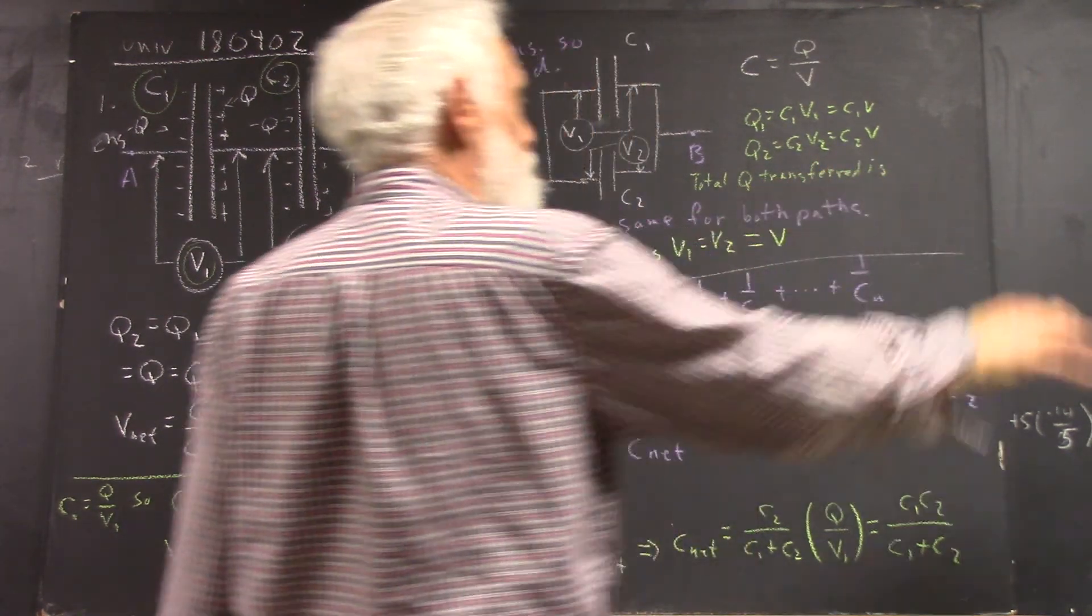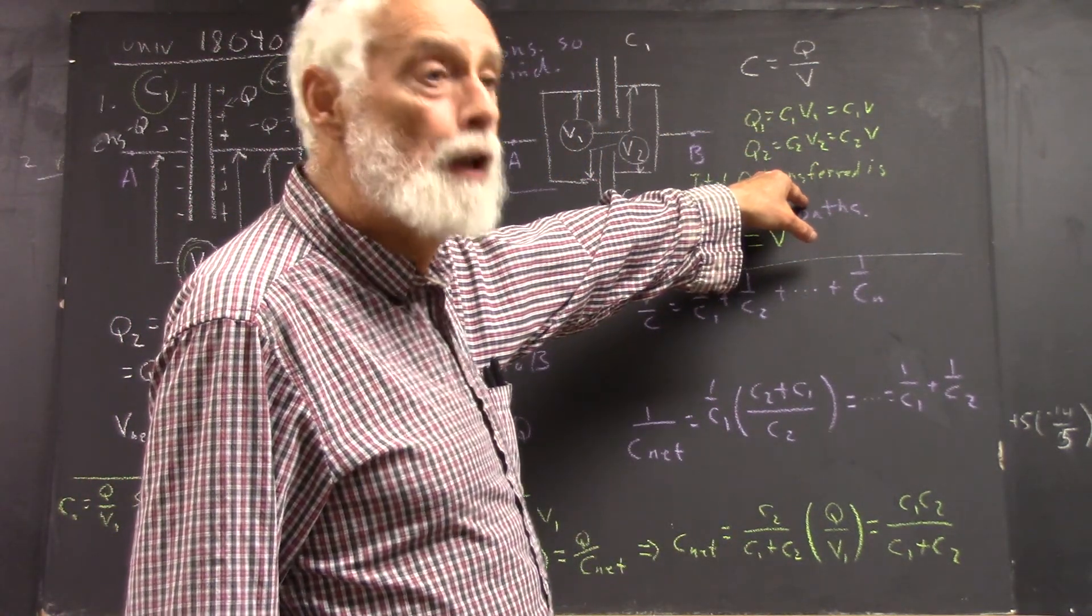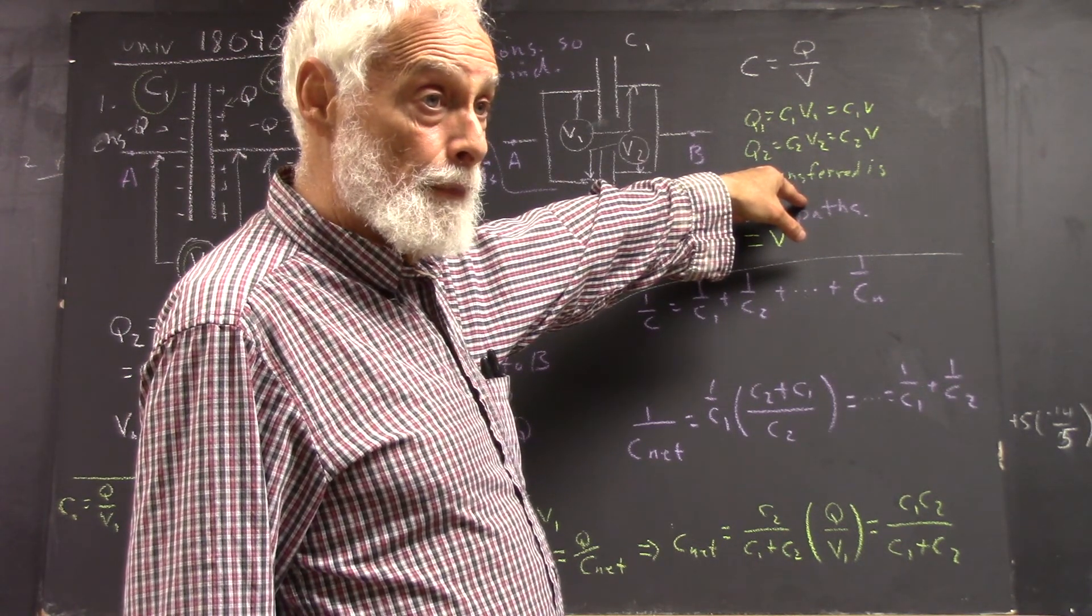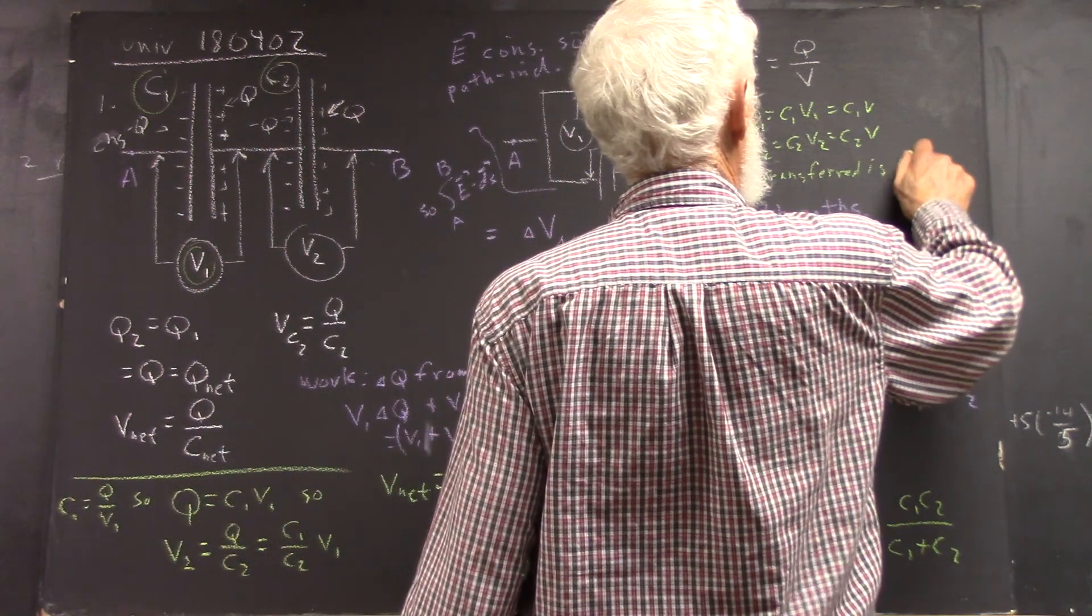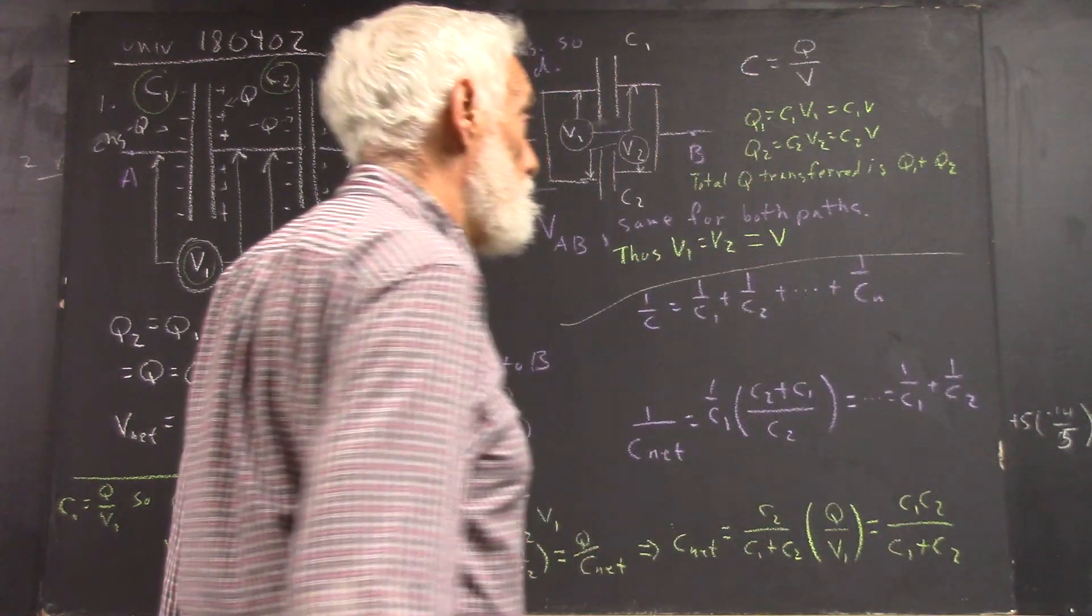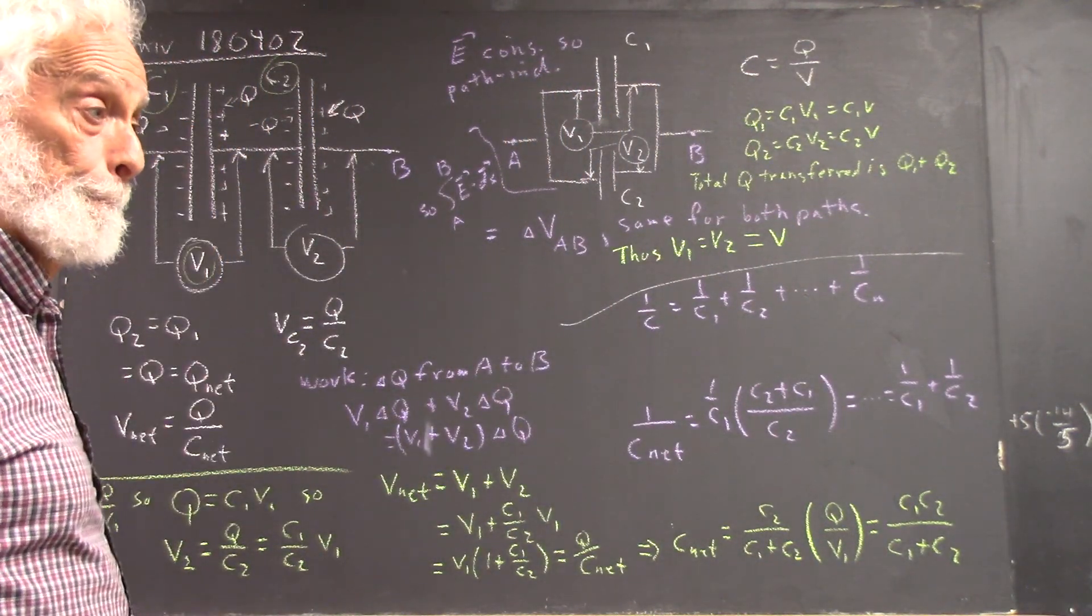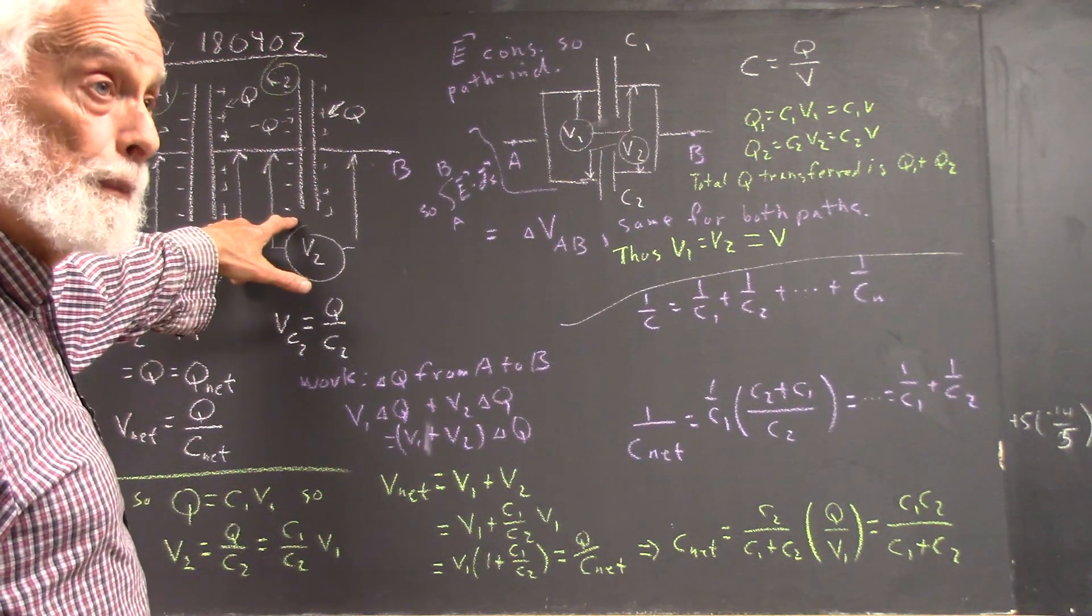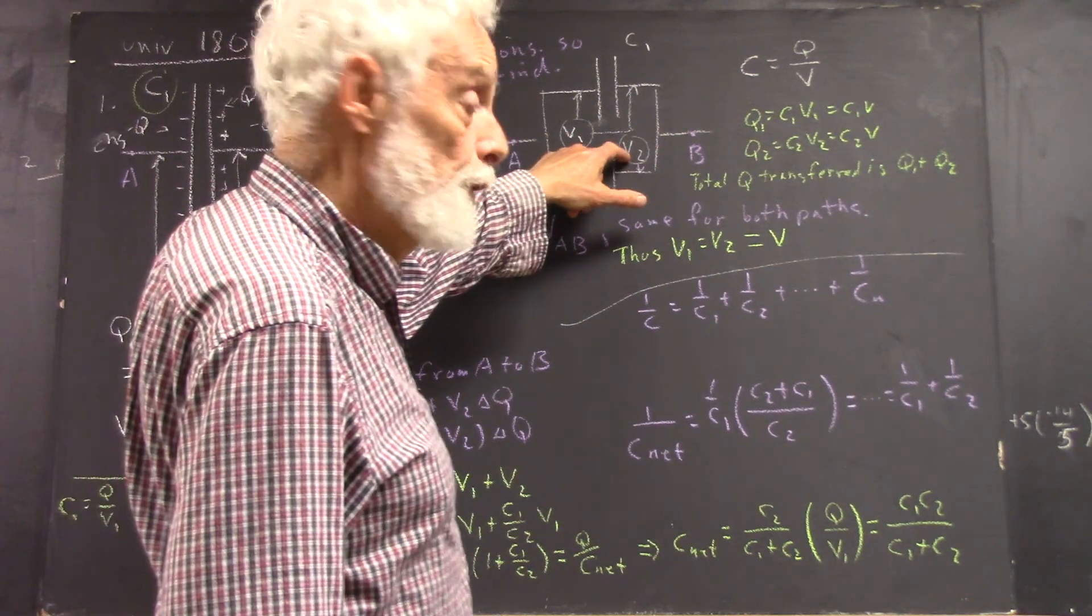So total charge transferred, now I don't want to write out all the words, but we're talking about total charge transferred from an initially uncharged state, right? It's Q1 plus Q2. There's your premise. So over here your premise is the charges are equal. Over here your premise is that the voltages are equal.